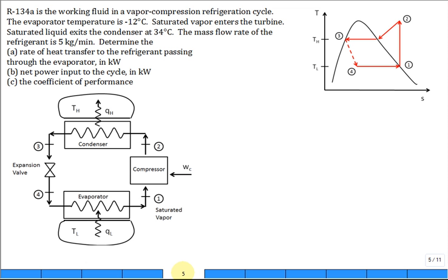Refrigerant 134A is the working fluid in a vapor compression refrigeration cycle. The evaporator temperature is -12°C. The temperature difference between the fluid in the evaporator and the external environment we're going to neglect. It's just -12 degrees C.